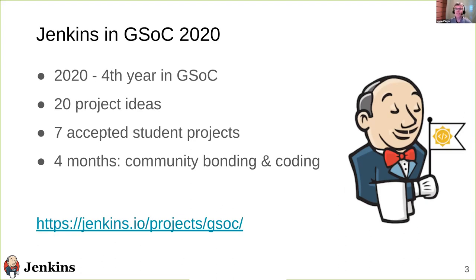This is our fourth year in Google Summer of Code. We started in 2016 and have grown ever since. There are actually thousands and thousands of students who have participated in the overall program. It's the largest open source program in existence and we're very proud to participate. This year, the Jenkins organization had 20 different project ideas proposed by the community, and we accepted seven students for the program. They've been working hard with their mentors on their projects for the past four months, and today the students are presenting their work.